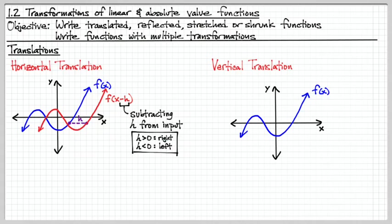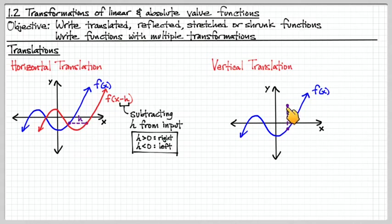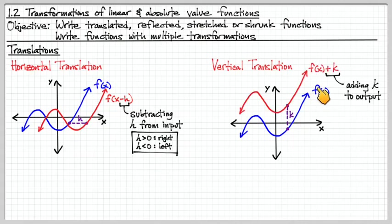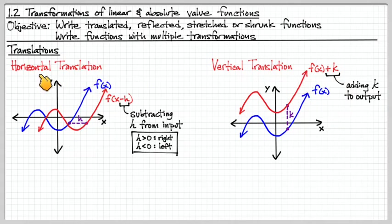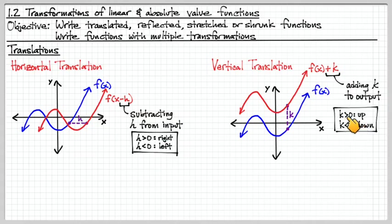Vertical translations are in some ways easier to picture. We have the same function f of x and we're going to move it up by k units. Every single point's output value is being increased by k. So we rewrite f of x as f of x plus k, where we're adding k to the output, and that makes all points of the original function move up by k units. For vertical translation we add k to the output; for horizontal translation we subtract h from the input. When k is positive it moves the function up, when k is negative it moves the function down.